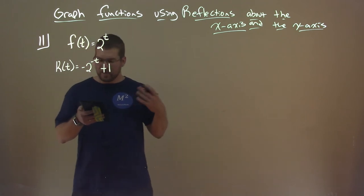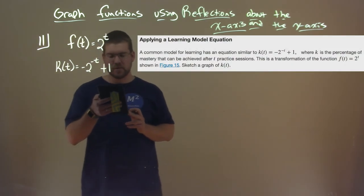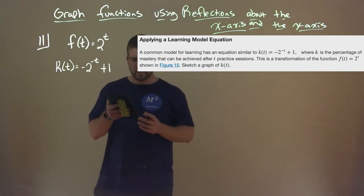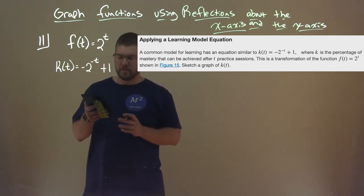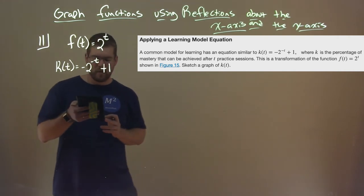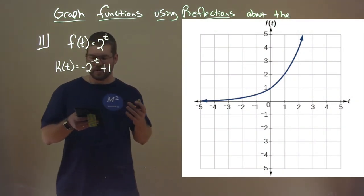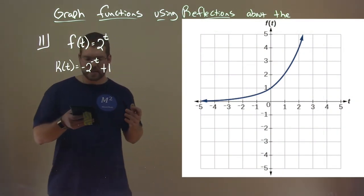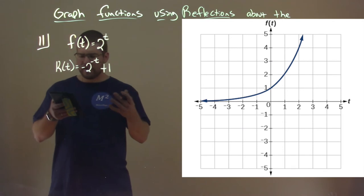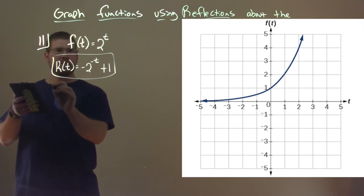All right, so this example here is applying a learning model equation. A common model for learning has an equation similar to k of t equals negative 2 to the negative t power plus 1, where k is the percentage of mastery that can be achieved after t practice sessions. This is a transformation of the function f of t equals 2 to the t power, and we want to sketch the graph of k of t. So our f of t, we can see here in this graph. That's our f of t function, the 2 to the t power there. But we want to sketch what's k of t here.